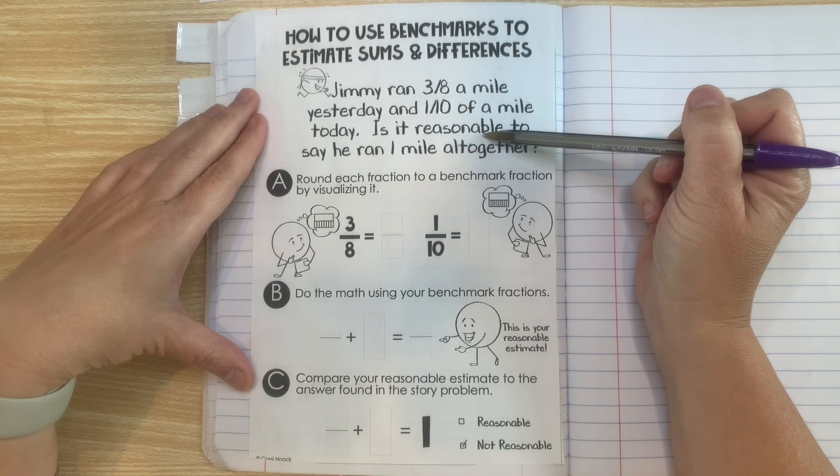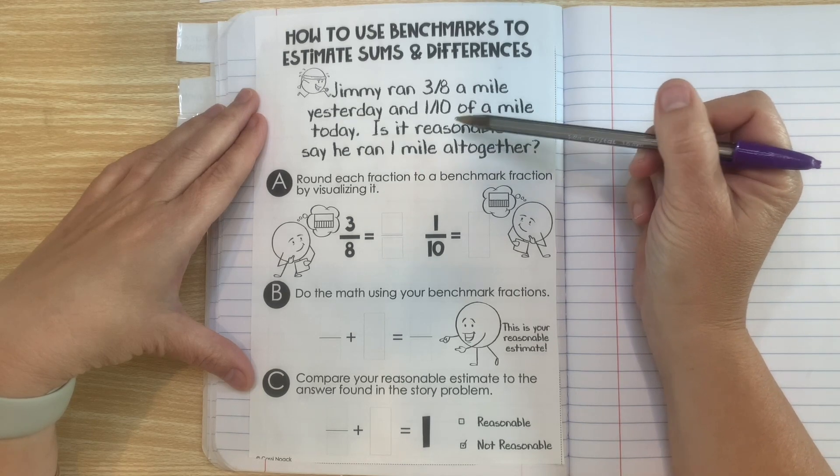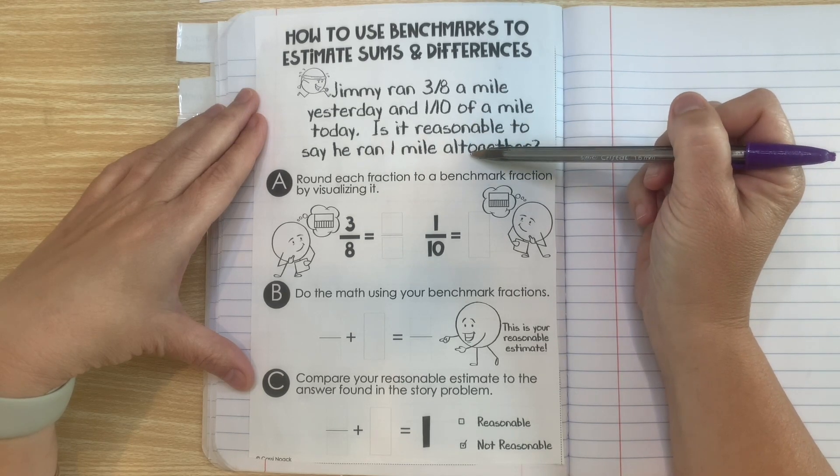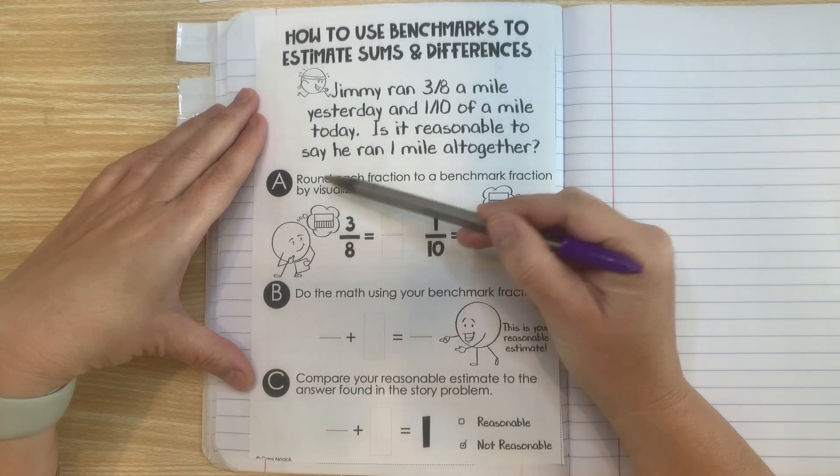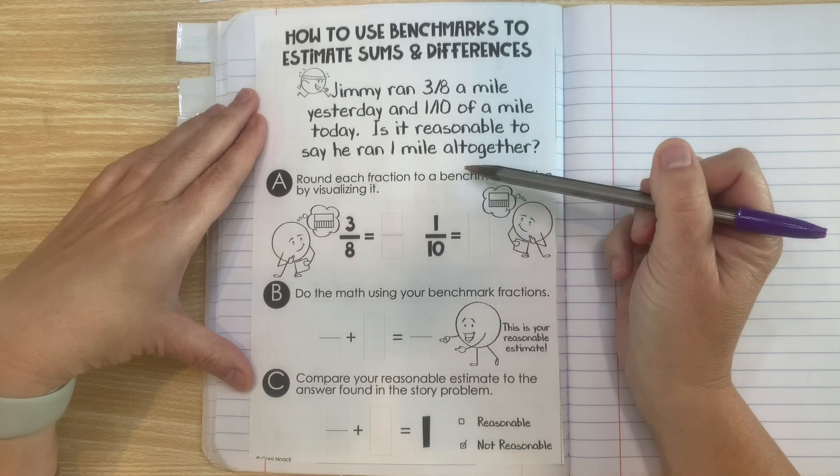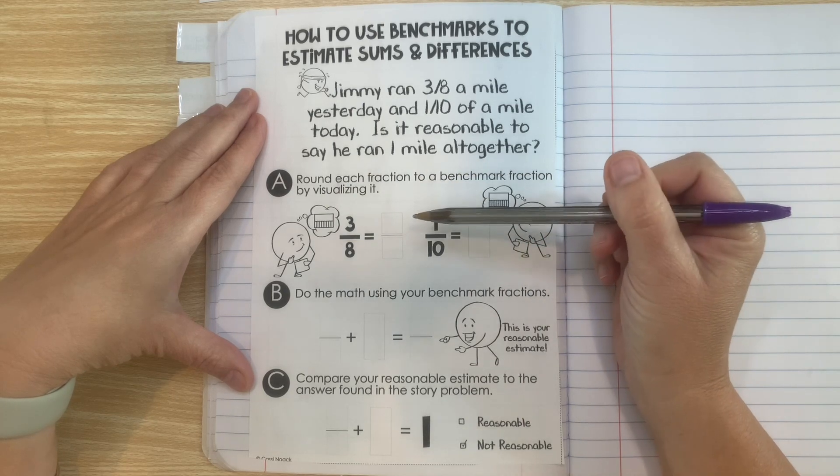Hmm, reasonable means it could make sense. So does it make sense if he says, I ran a mile? So let's work that out. So A says to round each fraction to a benchmark fraction by visualizing it.